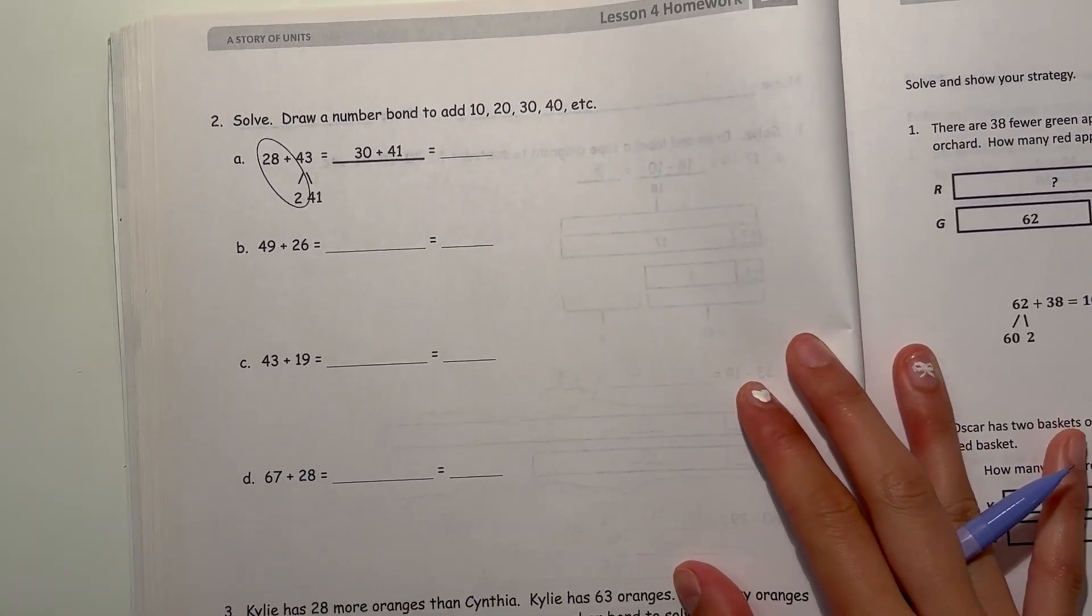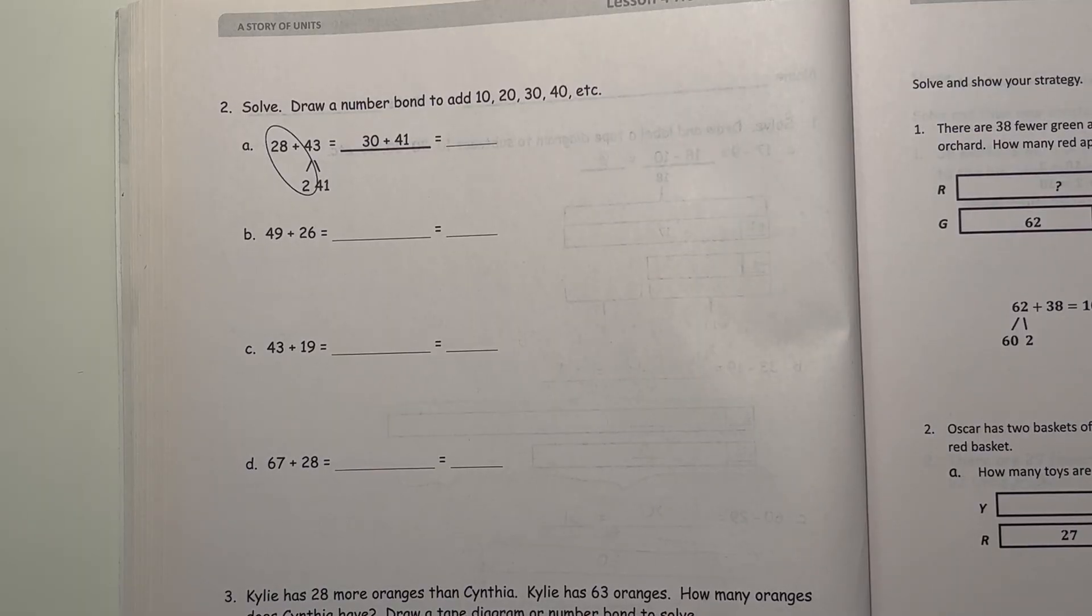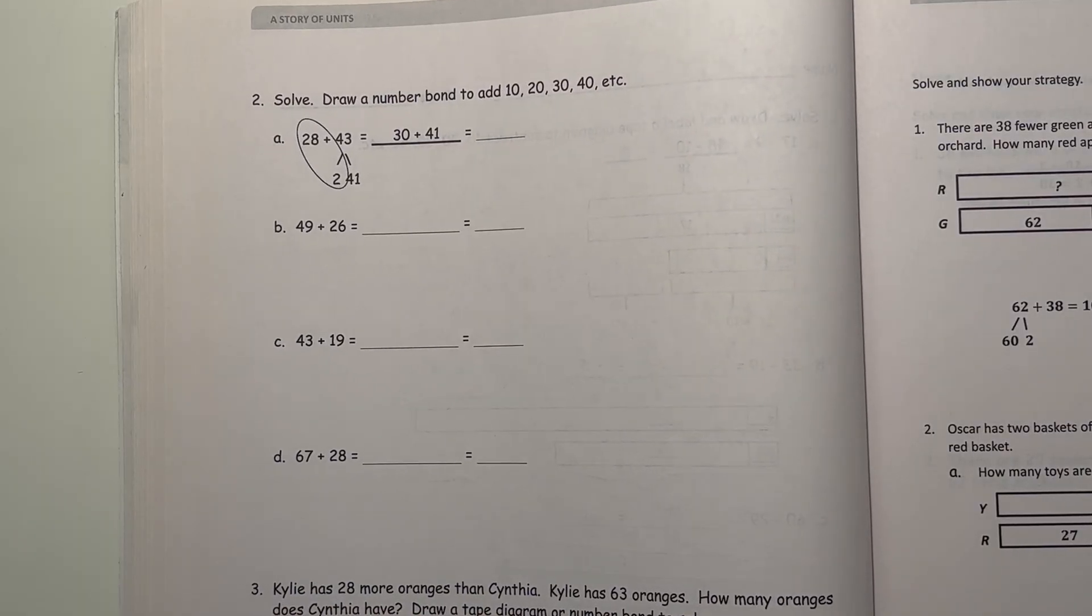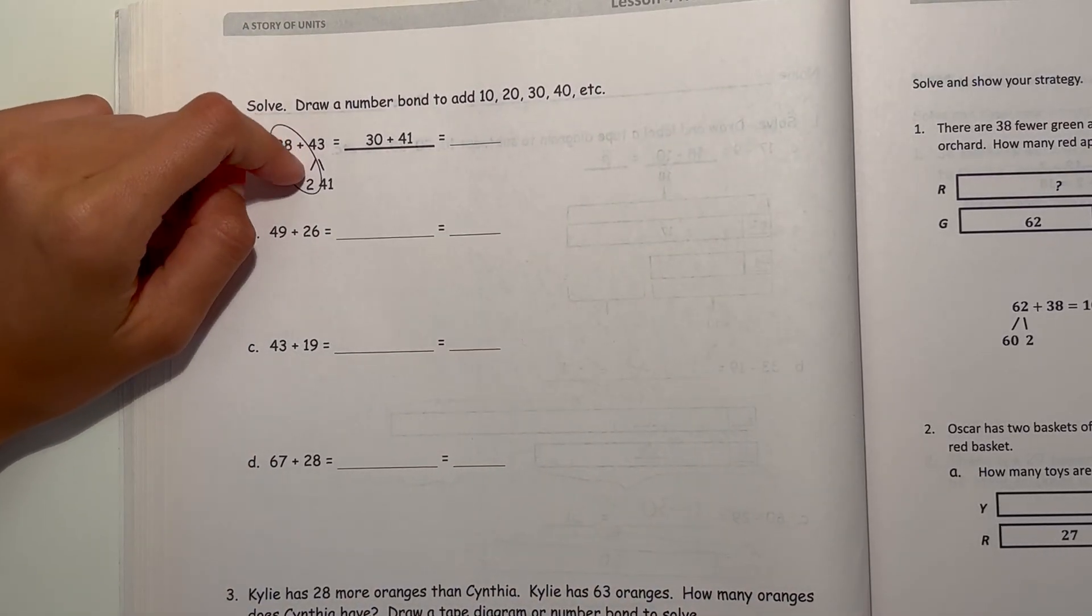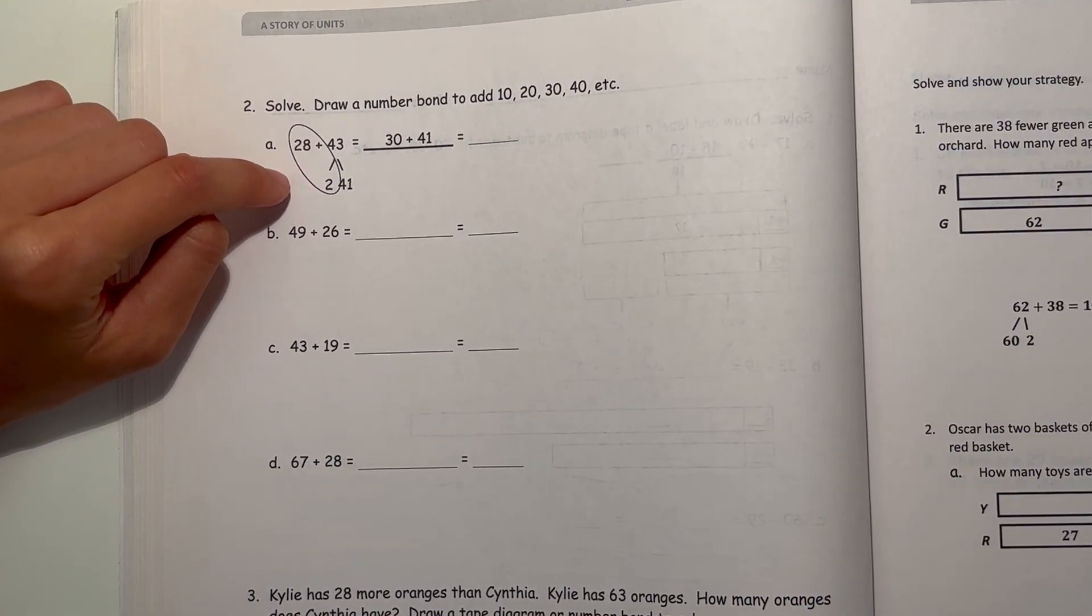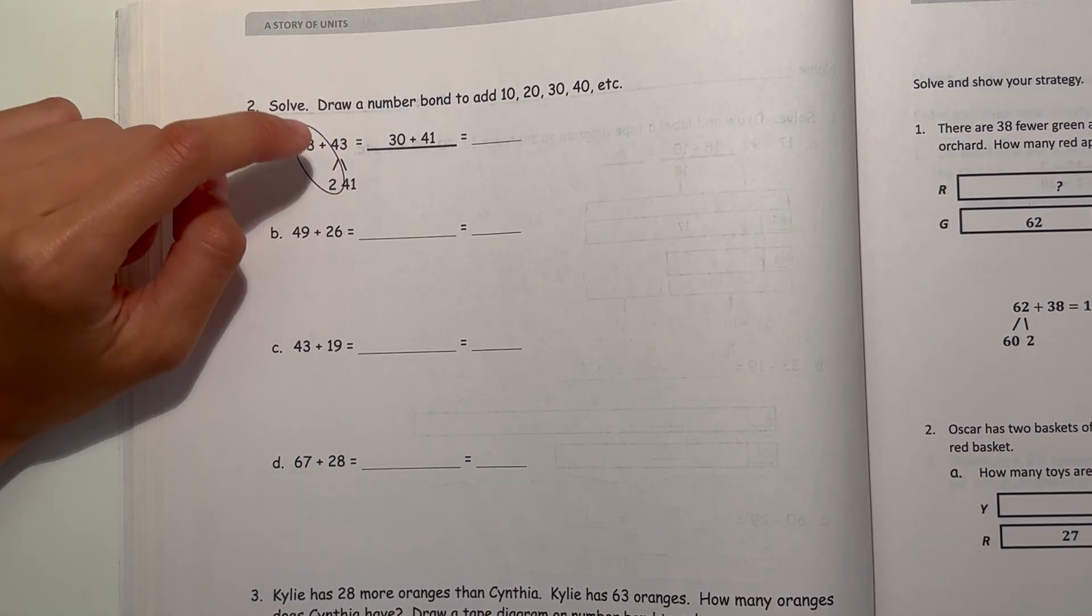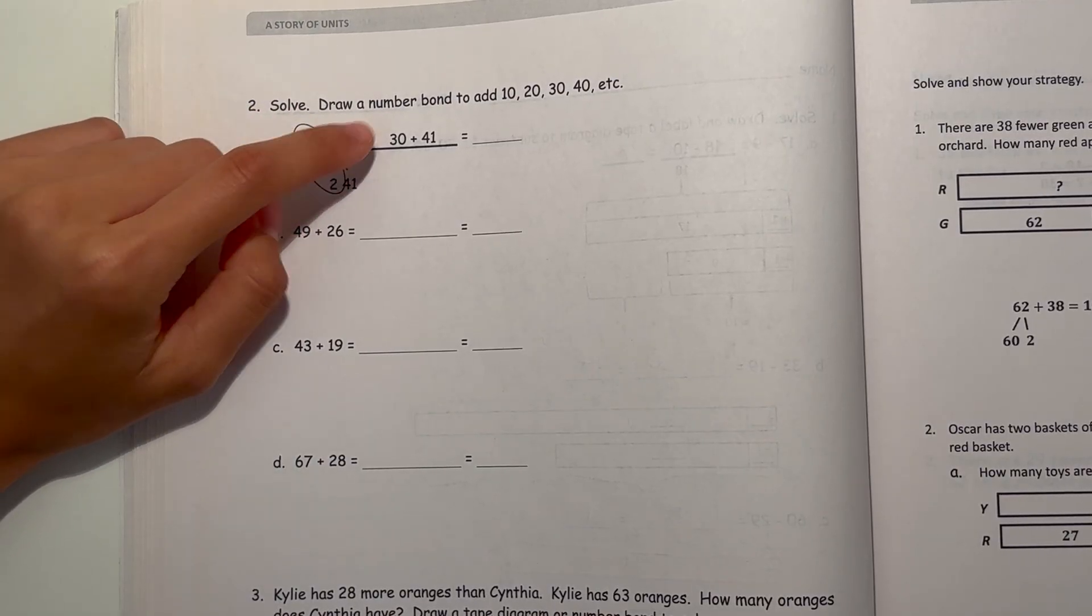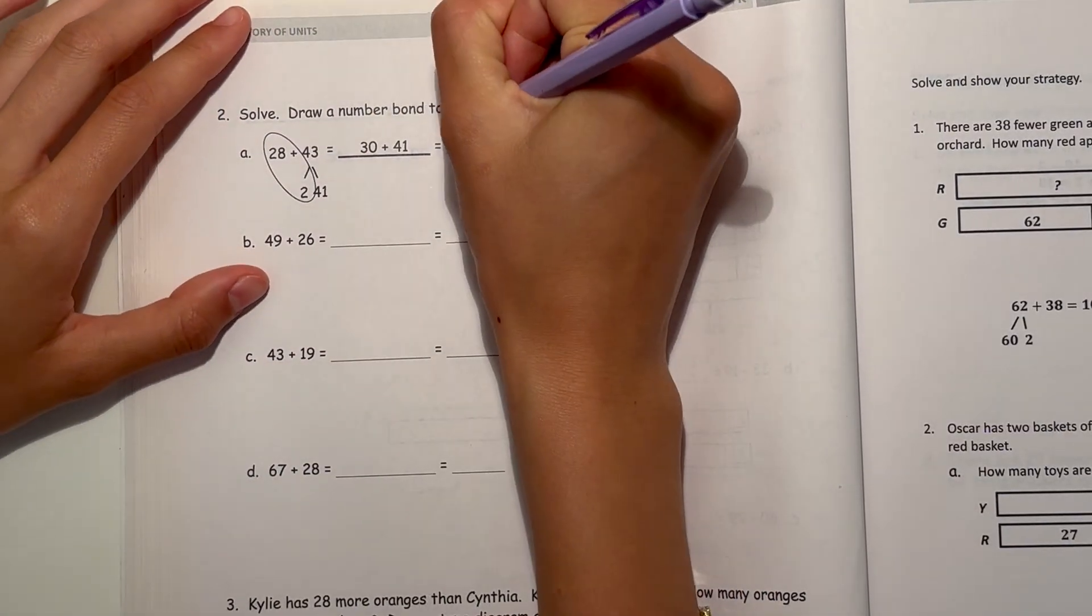Number 2, solve. Draw a number bond to add 10, 20, 30, 40, etc. So A, 28 plus 43. They broke apart 43 to take out 2, because 28 plus 2 would be the next 10. Alright, so let me add that to get 30, and you can't forget about that 41. So 30 plus 41 is 71.